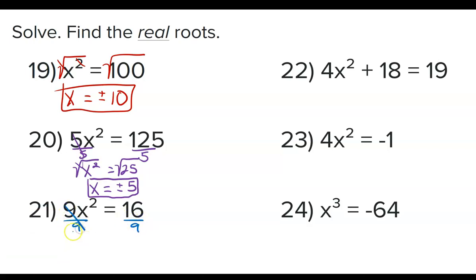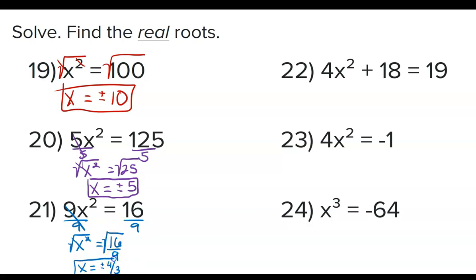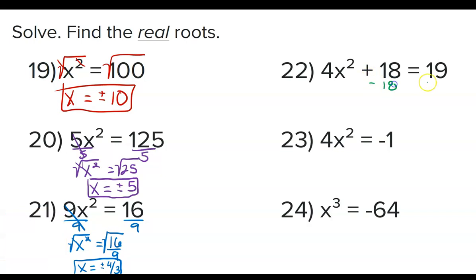Problem 21: we divide both sides by 9 so the 9s cancel, leaving x squared equals a fraction. These are both perfect squares so I'll leave it as a fraction, then square root both sides. To square root a fraction, square root the top and square root the bottom. It's an even root so we have the plus or minus symbol. The square root of 16 is 4 and the square root of 9 is 3, so our answer is ±4/3.